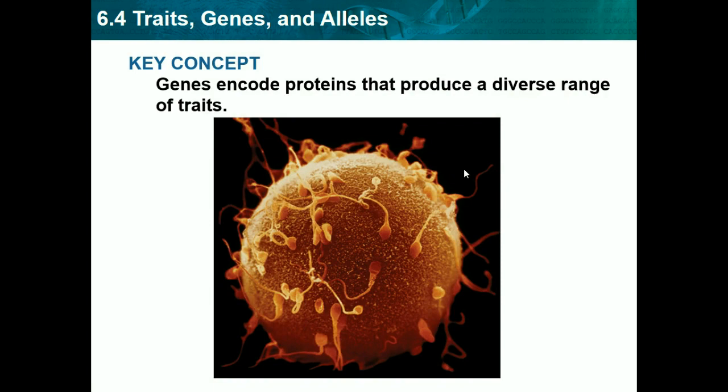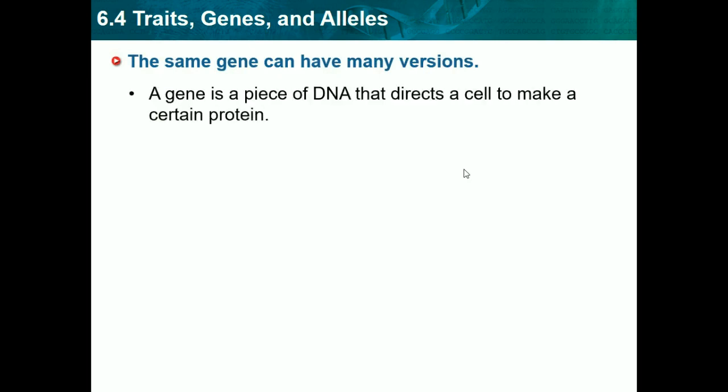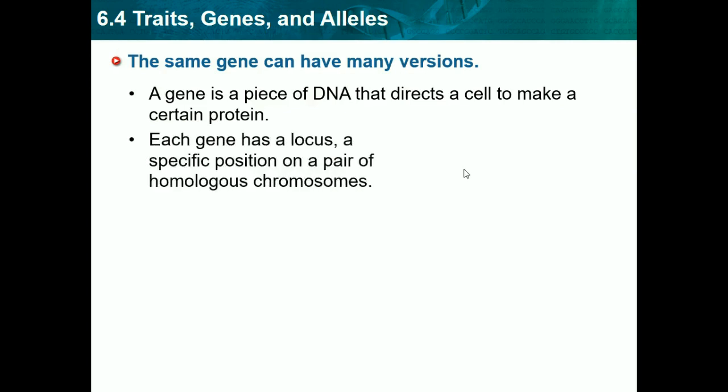Our key concept is genes encode proteins that produce a diverse range of traits. The same gene can have many versions. A gene is a piece of DNA that directs a cell to make a certain protein. We should already know that DNA is basically a set of instructions that our cells use to function — our cells use DNA to produce proteins, and there are many different proteins that do many different things.